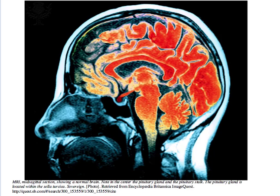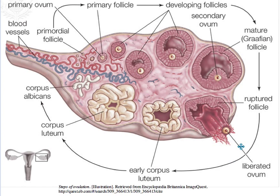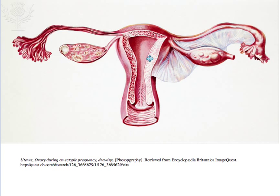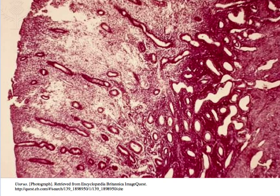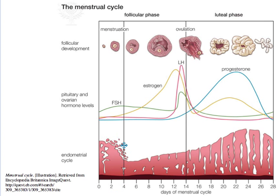In humans, the onset of puberty in females brings with it a cycle of follicular development, ovulation, and preparation of the uterine lining for possible pregnancy. If pregnancy does not occur, then the rich endometrial lining of the uterus is discharged as blood and tissue — menstruation.